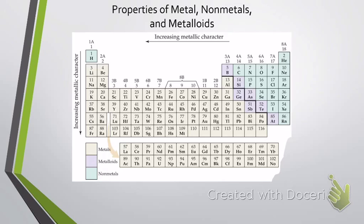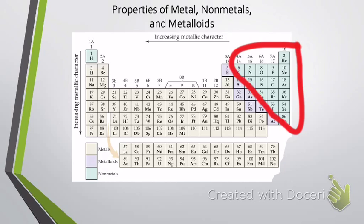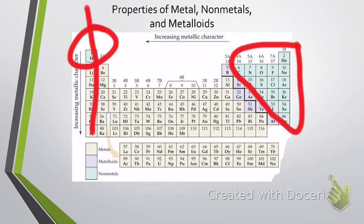The first thing is, let's review where their location on the periodic table. The nonmetals are on the right-hand side of the periodic table, with the exception of hydrogen. Hydrogen is in Group 1, that first family of the periodic table, but it is not a metal — it is a nonmetal.